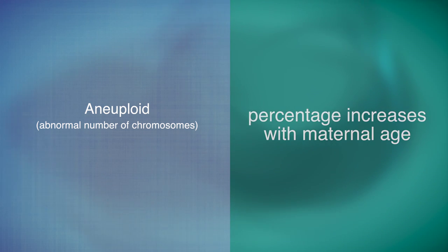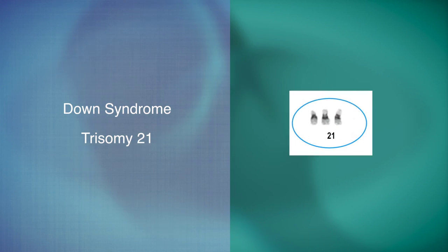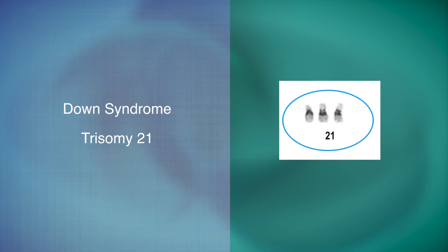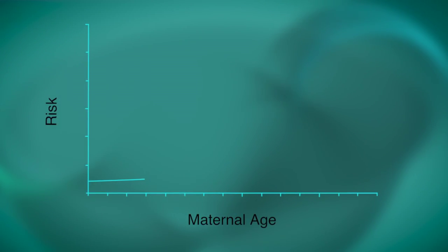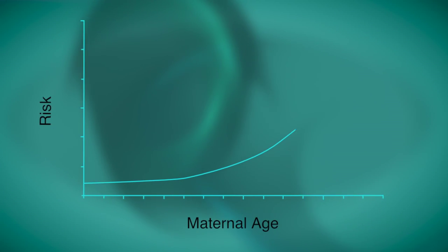A common example of aneuploidy is an extra chromosome number 21, Down syndrome or Trisomy 21. The risk of having a child with a chromosomal abnormality such as Down syndrome increases as a woman ages.